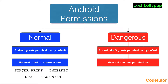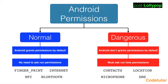Some examples of normal permissions are fingerprint permission, internet, NFC, and Bluetooth — these don't require any runtime request. Under dangerous permissions, some examples are contacts, location, microphone, and SMS. There are of course many more. You can go to the Android documentation to find out which are normal permissions and which are dangerous permissions.